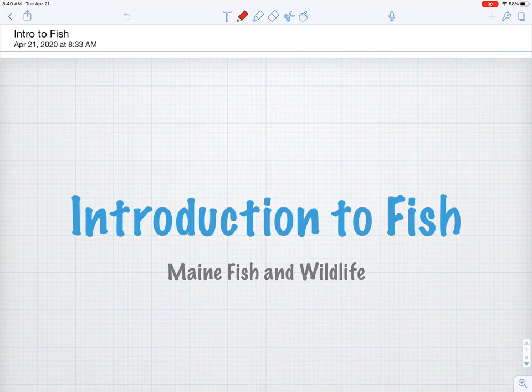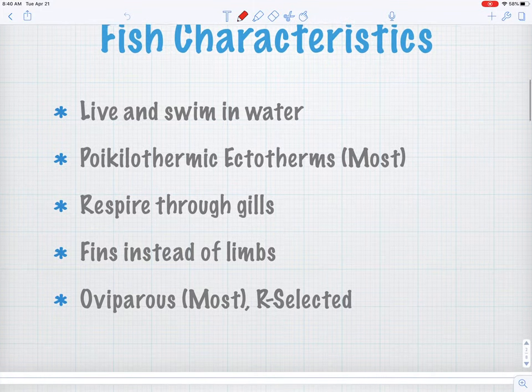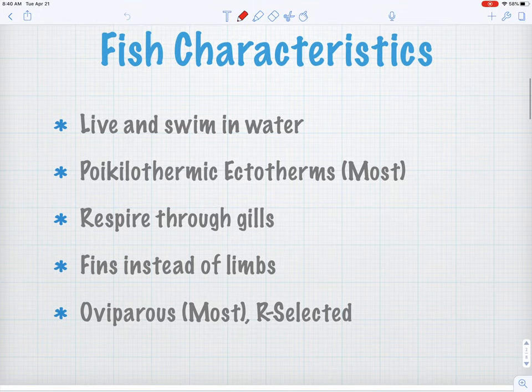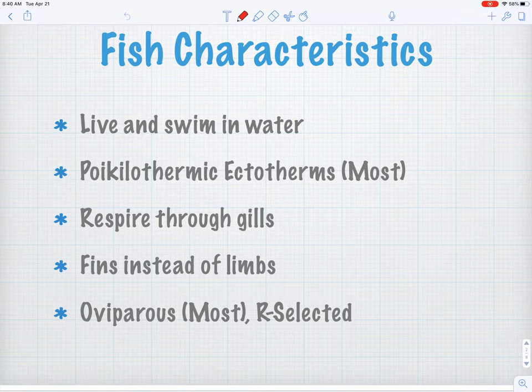Today we're going to talk about introducing what is a fish and what makes a fish a fish. My little son — he's three — he could look in a fish tank and say 'hey, that's a fish.' So there are obviously things in his brain that he's using to classify creatures as fish. Those characteristics would be that fish live and swim in water — they're aquatic creatures. They're poikilothermic ectotherms, meaning they're cold-blooded.